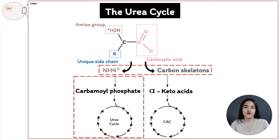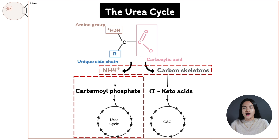In this video we're going to cover nitrogen excretion via the urea cycle. We're going to break down how ammonia is transported from the muscle and other tissues to the liver, where it's converted to urea and excreted safely in the urine. Then we're going to see how the urea cycle connects with the citric acid cycle.